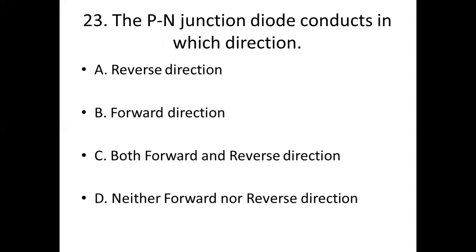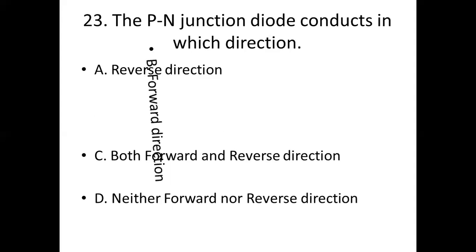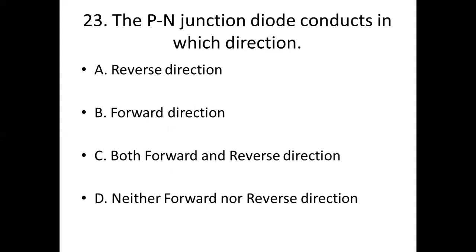Twenty-third one. The PN junction diode conducts in which direction? Option A: reverse direction. Option B: forward direction. Option C: both forward and reverse direction. Option D: neither forward nor reverse direction. Answer: Option B, forward direction.